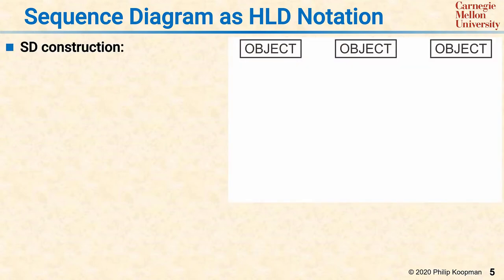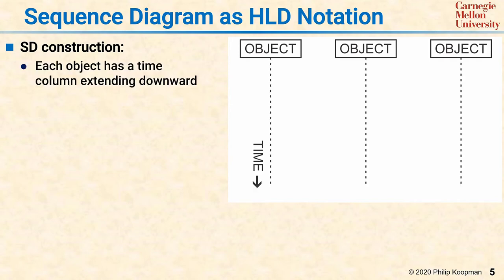UML sequence diagrams can be very handy as a high-level design notation. Each sequence diagram has a set of objects at the top of the diagram. Each object might be a component in the system or an instance of a class of objects. The objects have the ability to perform computation and communicate with other objects via messaging, subroutine calls, sending data, and so on. Each object has a timeline descending from top to bottom, and time progresses from top to bottom along the dotted lines.